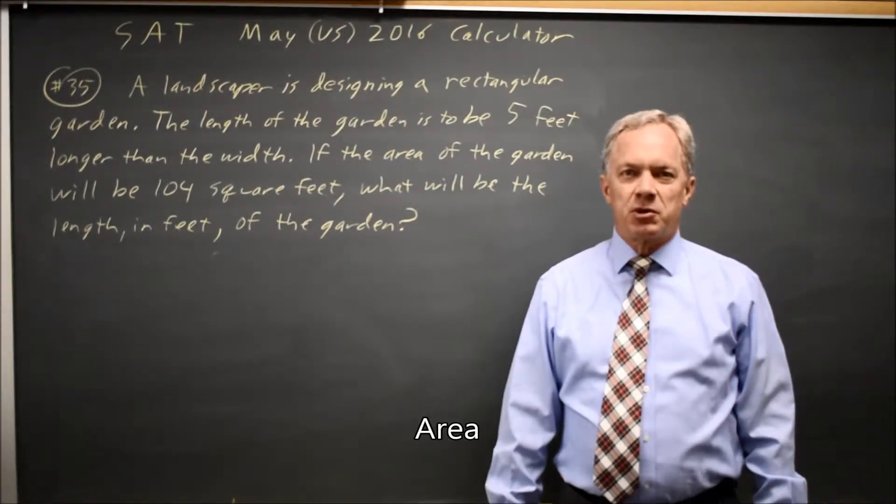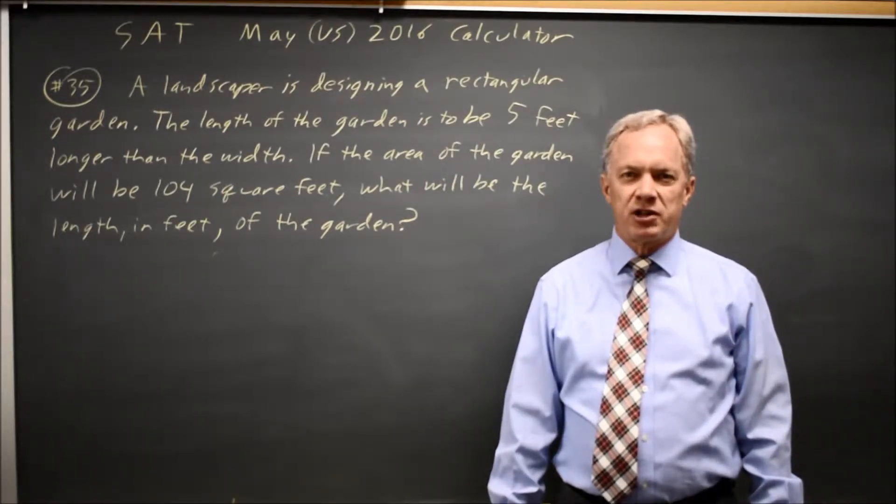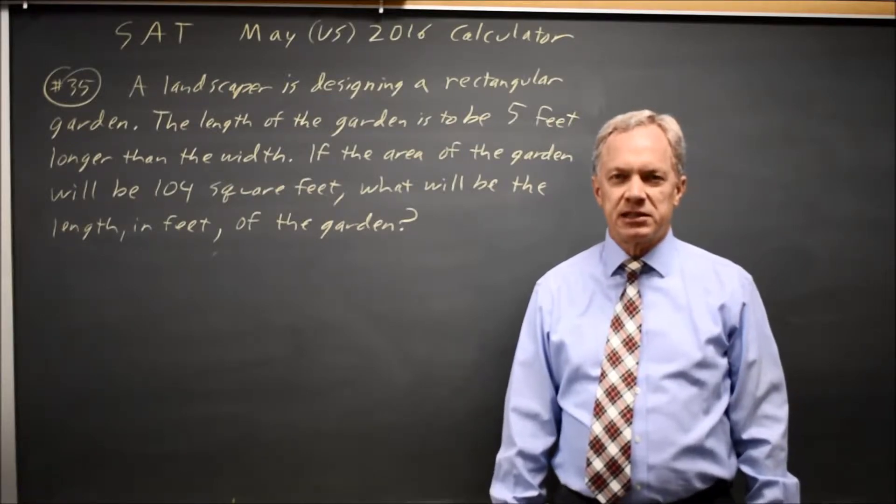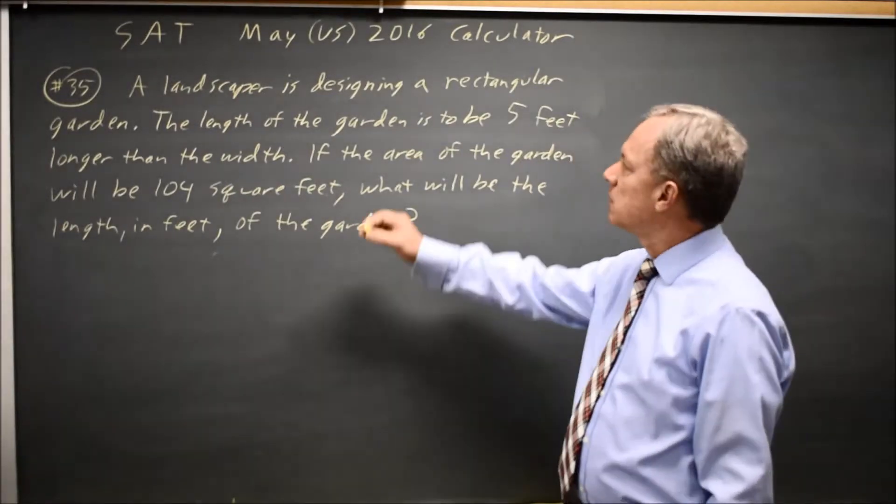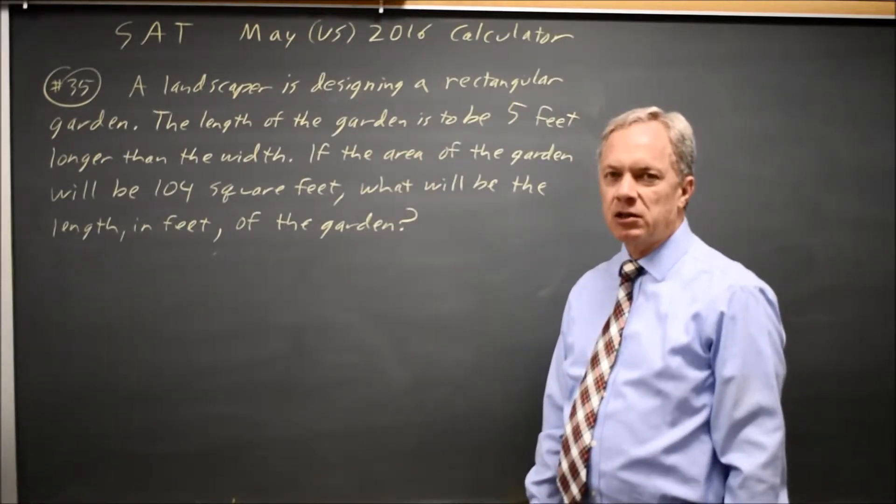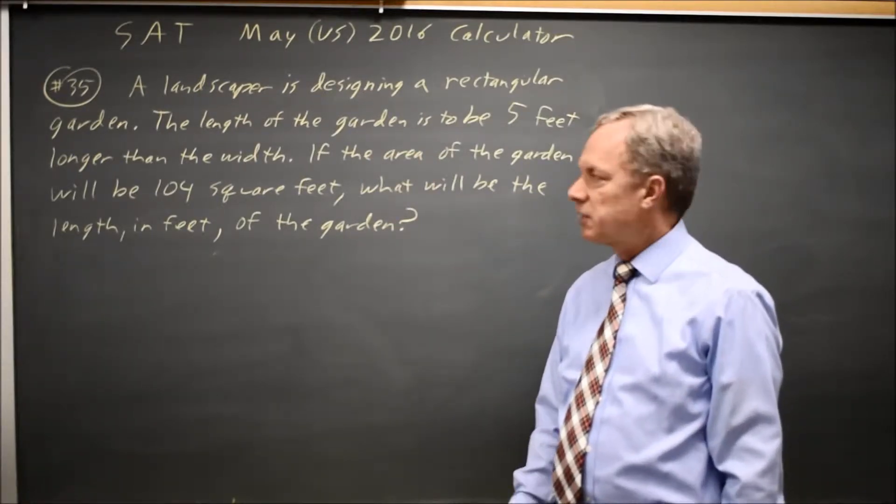This is calculator question number 35 on practice test 5 in the 2018 College Board Prep Book. It's also the May 2016 SAT. College Board describes a garden with a relationship between the length and width, and they tell us that the total area is 104, and they ask for the length.